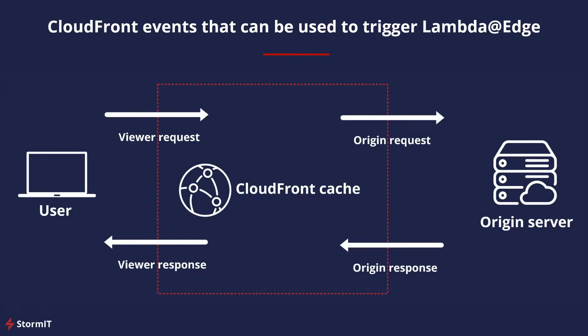CloudFront events you can use to trigger Lambda at Edge: First, viewer requests — events that occur when an end user or device on the internet makes an HTTP request to CloudFront. Second, viewer responses — this event occurs when the CloudFront server at the edge is ready to respond to the end user. Third, origin requests — this occurs when the CloudFront edge server does not already have the requested object in its cache and the request is ready to be sent to your backend origin server. Fourth, origin responses — this occurs when the CloudFront edge server receives a response from your backend origin web server.